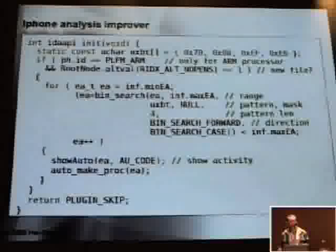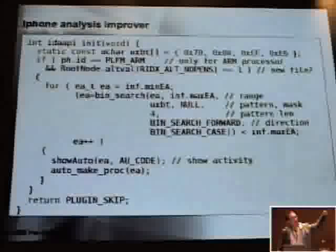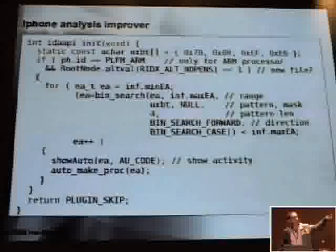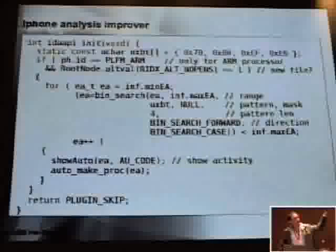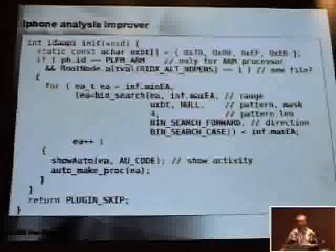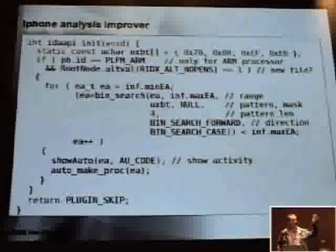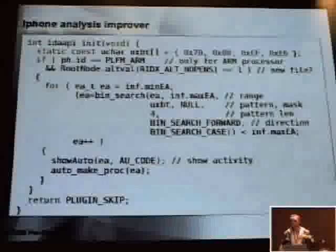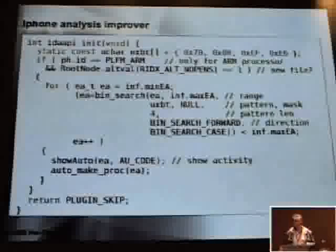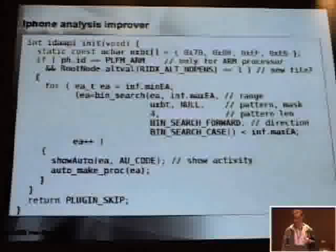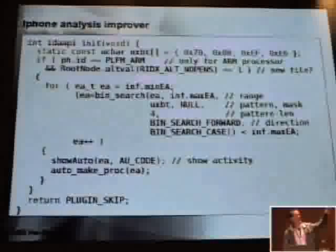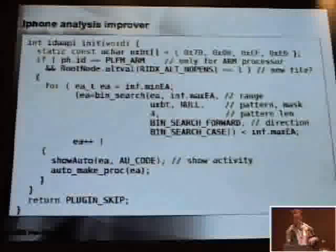This plugin is very simple. It has a for loop that searches for the pattern. As soon as it finds it, it calls auto_make_proc — create a procedure at that address. The same pattern can be used for any byte sequences, not only for this particular instruction. The plugin works at initialization time and after that doesn't do anything. It even unloads itself from memory because it's not used anymore.